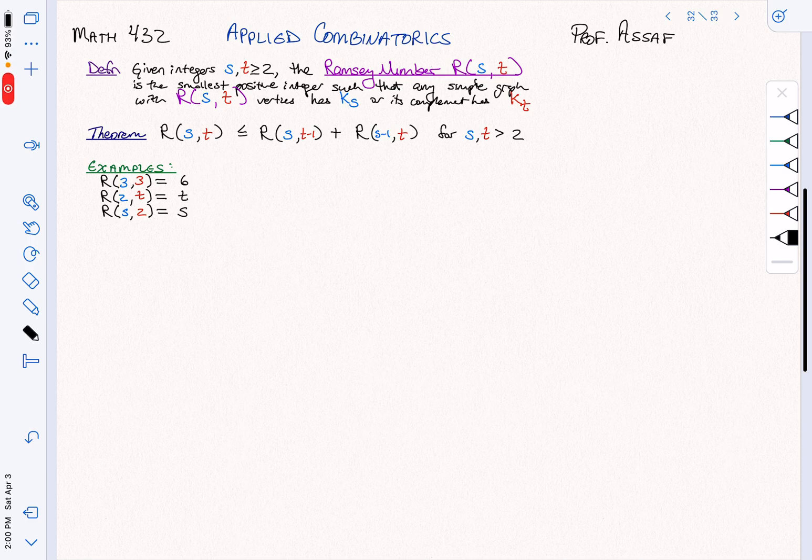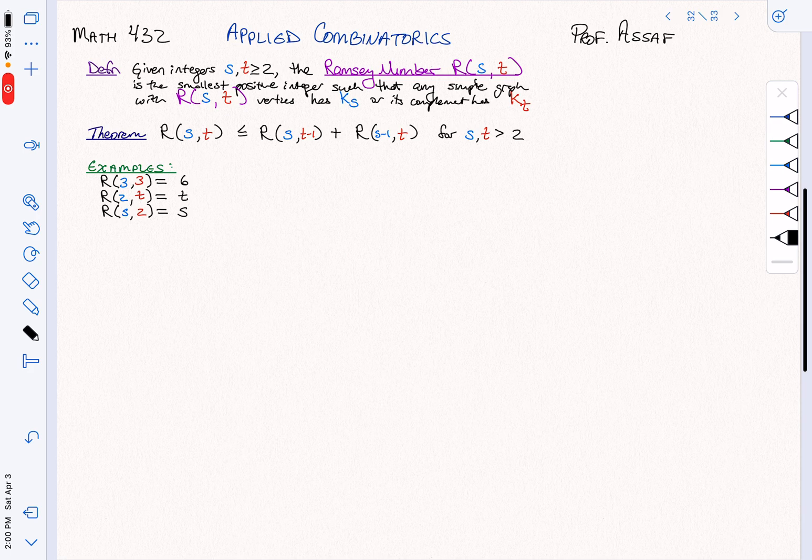This is Math 432, Applied Combinatorics. I'm Professor Asaph, and we're still talking about Ramsey numbers. Remember that a Ramsey number is the smallest positive integer such that any simple graph with this many vertices either contains the complete graph Ks or its complement contains Kt.